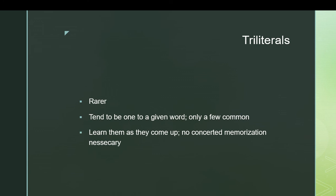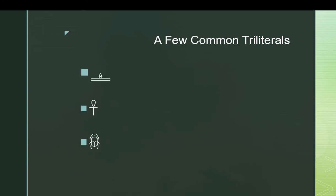Just learn those vocabulary items effectively, because triliterals generally just appear in either one word or all the variants of that word. For example, the first one, hotep — that is an offering table, and it represents the consonants dotted h-t-p. It appears basically only in the word hotep, which means to be at peace, or to be safe or satisfied. It shows up a lot in royal names, that kind of thing.